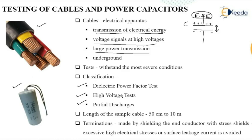For overvoltage and withstand tests, samples have to be carefully prepared and terminated; otherwise excessive leakage or flashovers may occur. The normal length of the cable sample used varies from 50 centimeters to 10 meters. Terminations are generally made by shielding the end conductor with stress shields to relieve the ends from excessive electrical stress, and cable ends are provided with shields to avoid surface leakage current from the measuring circuits.